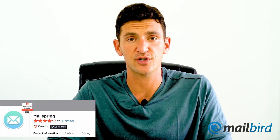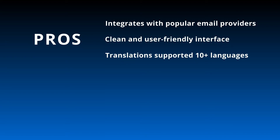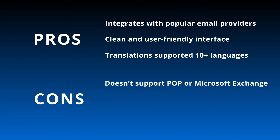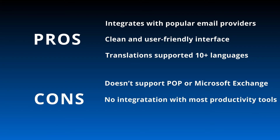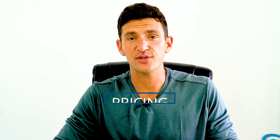With a 4.1 out of 5 rating, Mailspring stands out for its easy-to-use interface, email tracking, access to social media platforms, and building target profiles. Benefits include integration with most email providers, a clean user-friendly interface, and translation support in over 10 languages. The main disadvantages are no POP or Microsoft Exchange support, limited integration with popular productivity tools, and most advanced features only available on paid plans. The free version has limited options; the Pro version costs $8 per month.